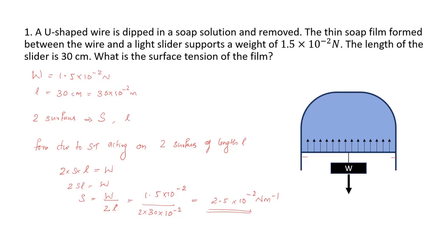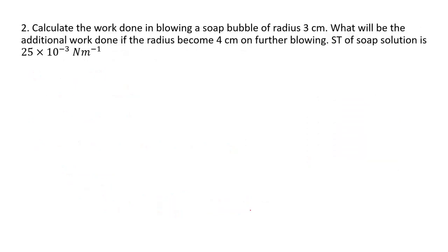Hope that's clear. Let's move on to the next question. Question number 2: Calculate the work done in blowing a soap bubble of radius 3 cm. What will be the additional work if the radius becomes 4 cm on further blowing? The surface tension of the soap solution is 25 × 10⁻³ Newton per meter.